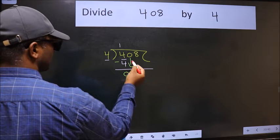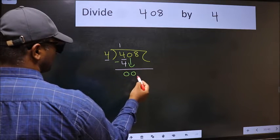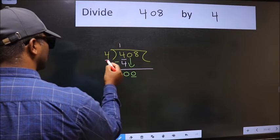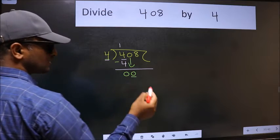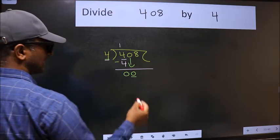After this, bring down the next number. So 0 down. Now here we have 0 and here 4. 0 is smaller than 4, so we should bring down the second number.